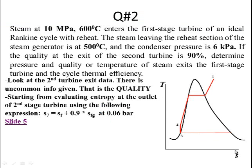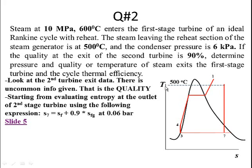Now state 7 is identified on the T-S diagram. We need to identify state 6, the inlet of the second stage turbine. We locate state 6 by drawing two lines: the first is the isentropic expansion line, which is a vertical line in the T-S diagram. From state 7, drawing a vertical line, its intersection with the 500°C isotherm — the temperature at state 6, the turbine inlet — identifies state 6 on the diagram.